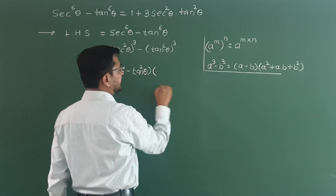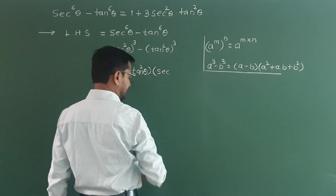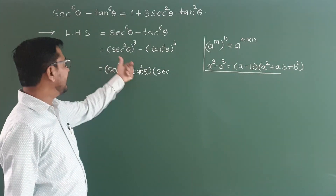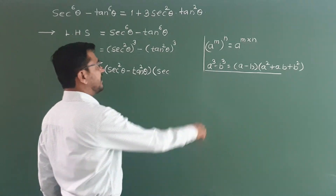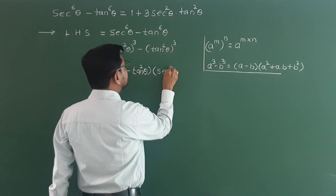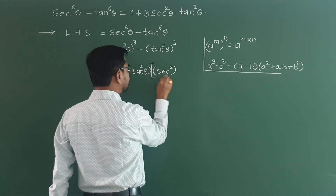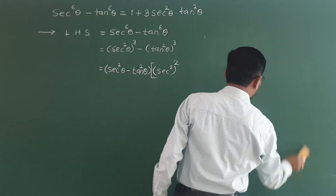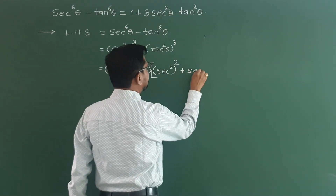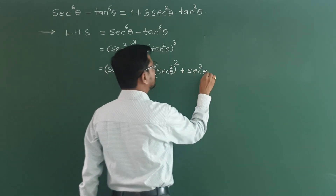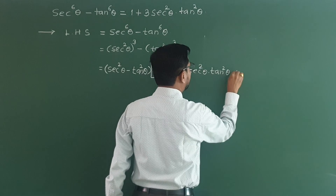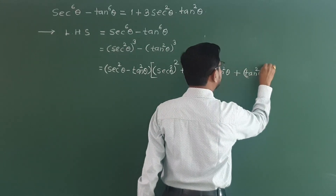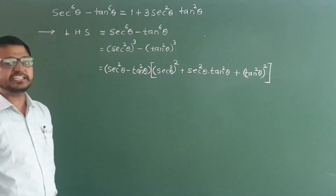And in the second bracket: a square — here the a value is sec square theta and b value is tan square theta. So a square is sec square theta bracket square, then plus ab, which is plus sec square theta into tan square theta, plus b square which is tan square theta bracket square. Second bracket is complete.